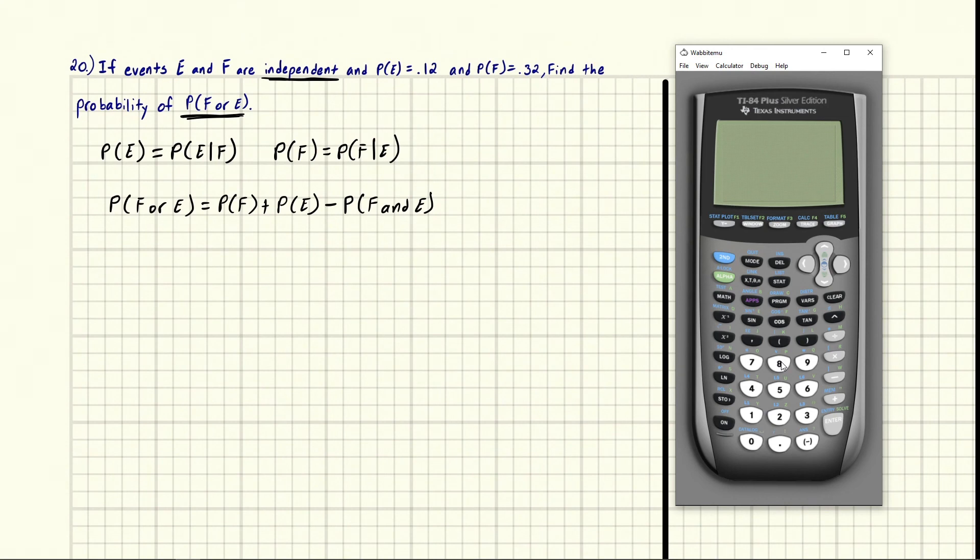The formula for and probability is the probability of F and E is equal to the probability of F times the probability of E given F. Now you might look at this and say, wait a second, this simplifies down because check this out. We found out up here based on independence that the probability of E given F—well, here it is, E given F—that's equal to the probability of E.